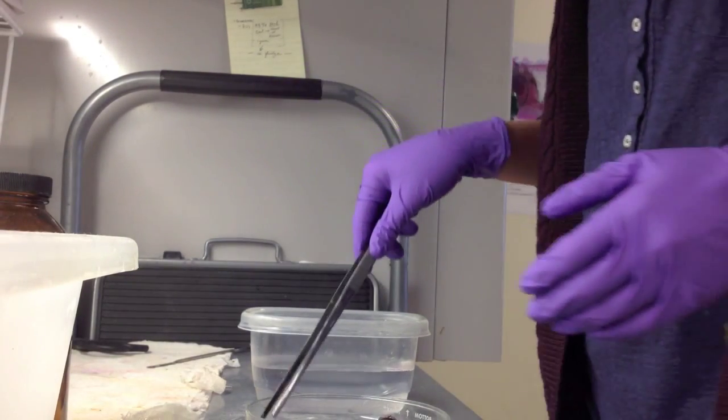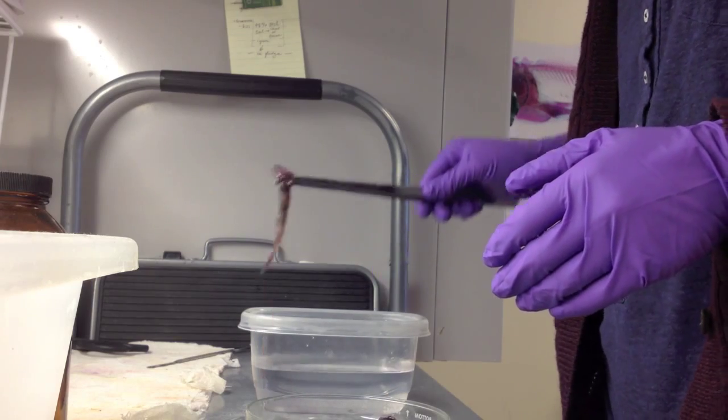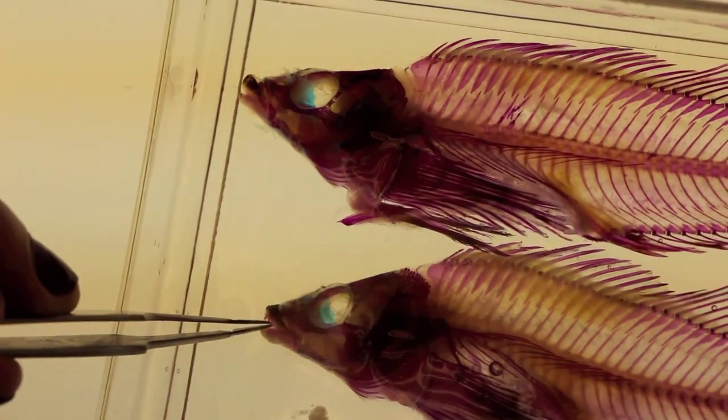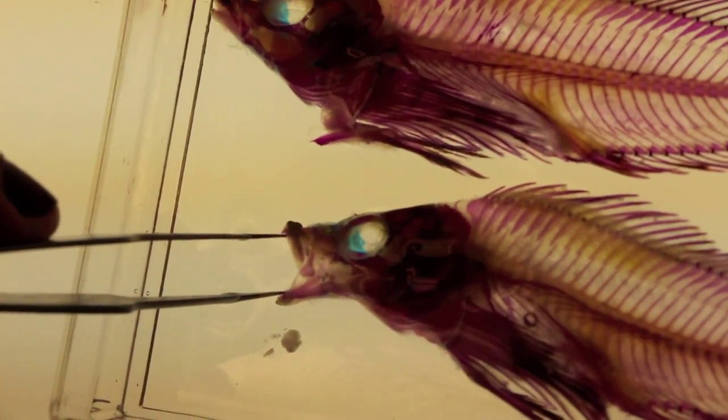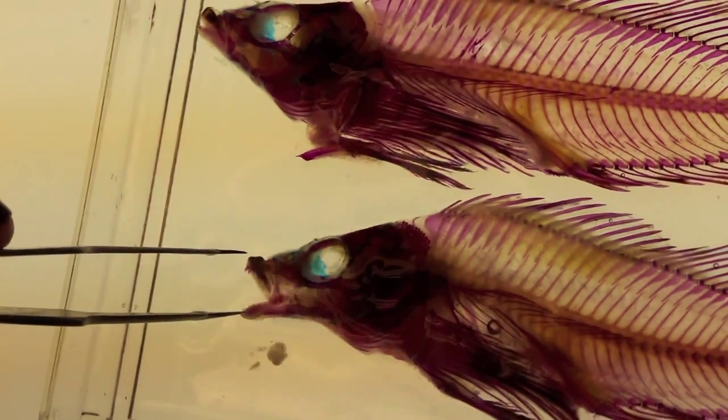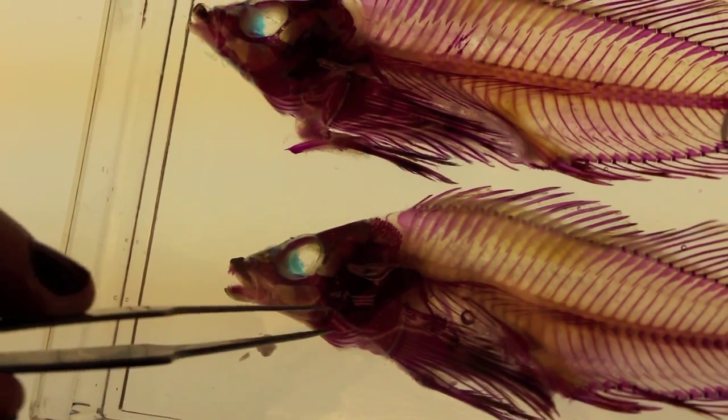Next, we place the specimens in 0.25 KOH for one day. The organism is then placed in glycerin for storage. As you can see, the specimens are easy to move, and the skeleton is visible. The cartilage is blue, and the bones are red.